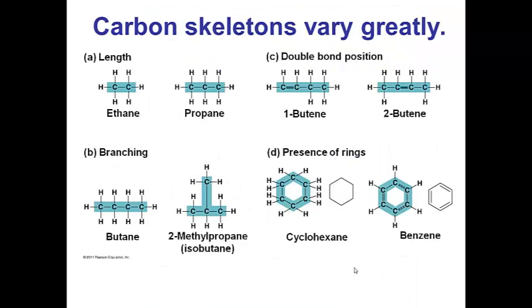And in addition, if we add more and more carbons to these chains, we can get a variety of carbon skeletons that vary in several different ways. For example, we can have carbon skeletons of different lengths, so chains of carbons that are longer or shorter.